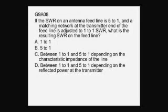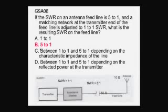If the SWR on an antenna feed line is 5 to 1 and a matching network at the transmitter end of the feed line is adjusted to 1 to 1 SWR, what's the resulting SWR on the feed line? Now this may give you some pause here because we talk about matching networks or antenna tuners being used to match an antenna. If the SWR on the antenna feed line is 5 to 1 and you put a matching network at the transmitter and adjust that to 1 to 1, what's the resulting SWR on the feed line? It's 5 to 1. The SWR on the feed line does not change. All we do is change the impedance that the transmitter sees with the impedance matching network here just before the transmitter.